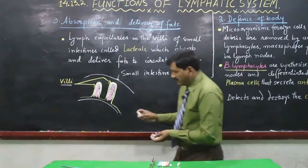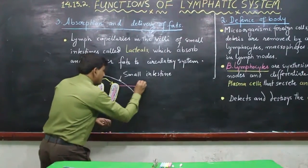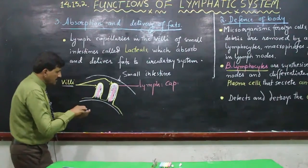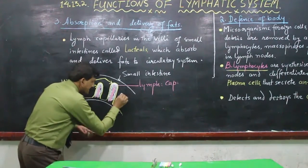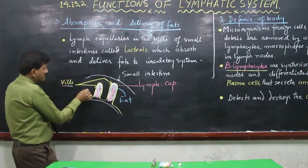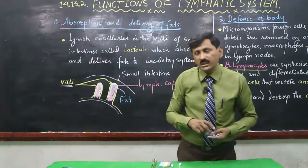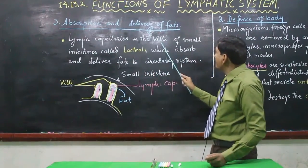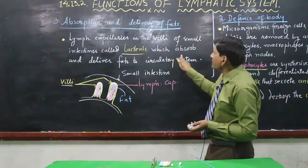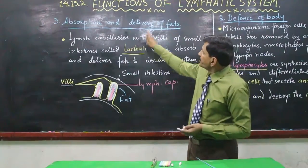In the villi of the small intestine, lymph capillaries known as lacteals absorb fats from the small intestine and return them towards the circulatory system. So the third function of the lymphatic system is the absorption and delivery of fats to the circulatory system.